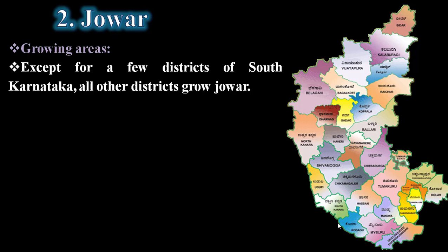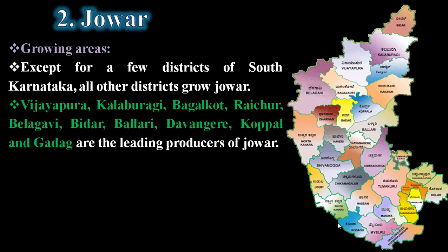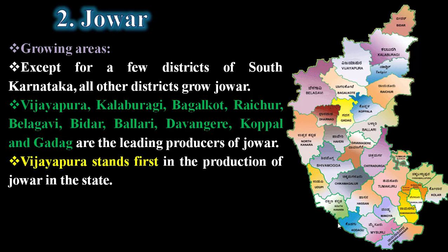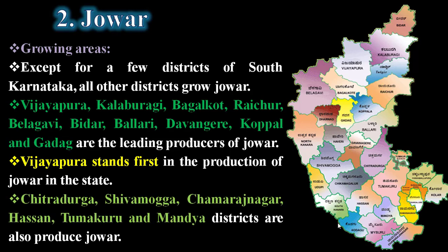Except for a few districts of South Karnataka, all other districts grow jowar. Vijayapura and Kalaburagi are the leading producers of jowar, with Vijayapura standing first in production in Karnataka. Chitradurga, Shivamogga, Chamarajanagar, Hassan, Tumkur, Mandya districts also produce jowar. That is the information about jowar.